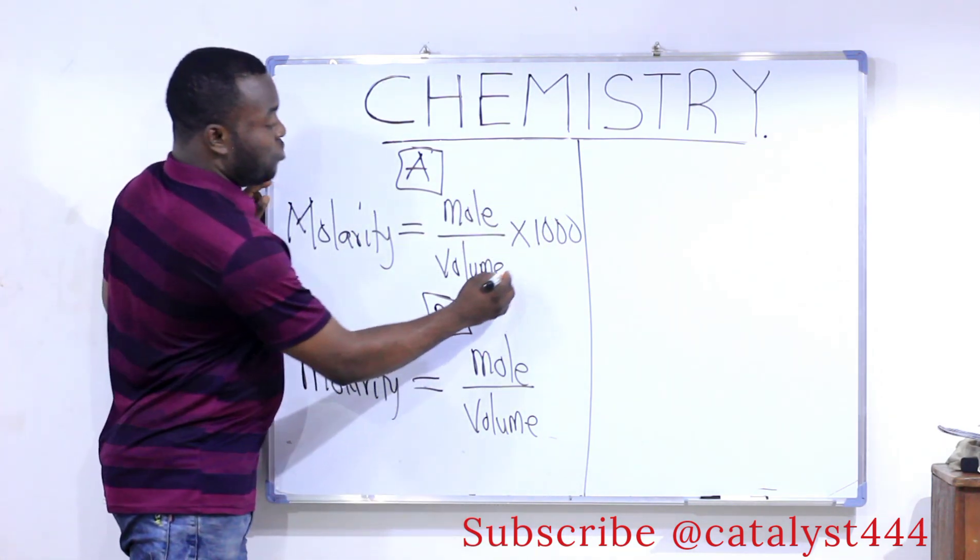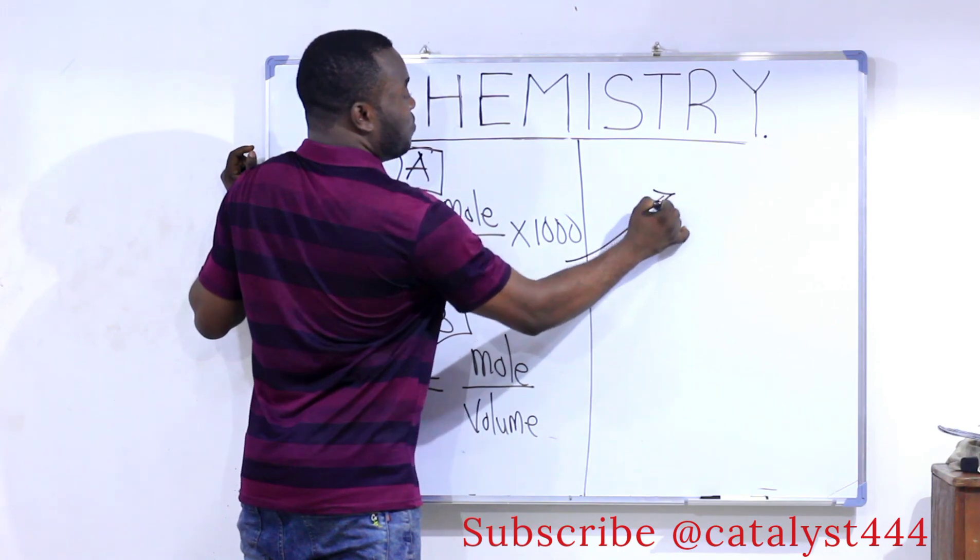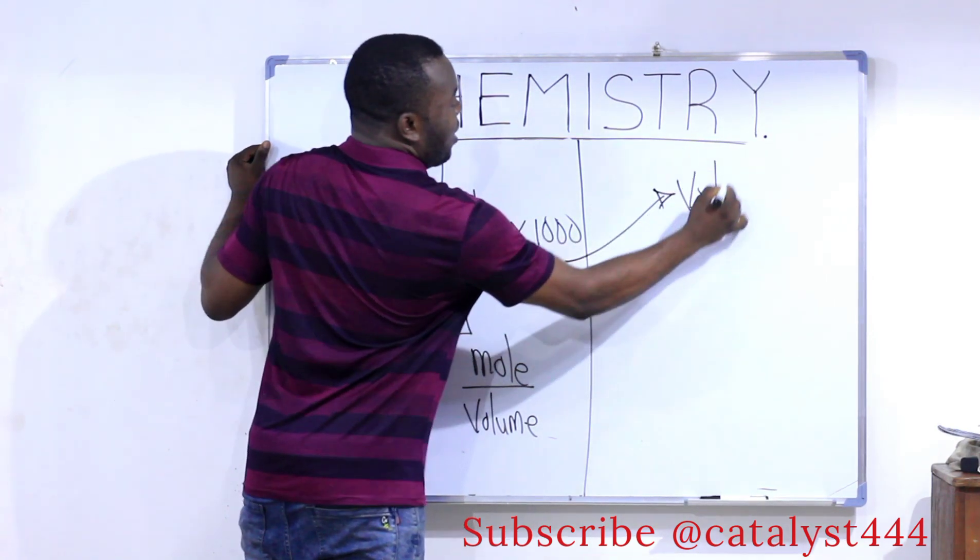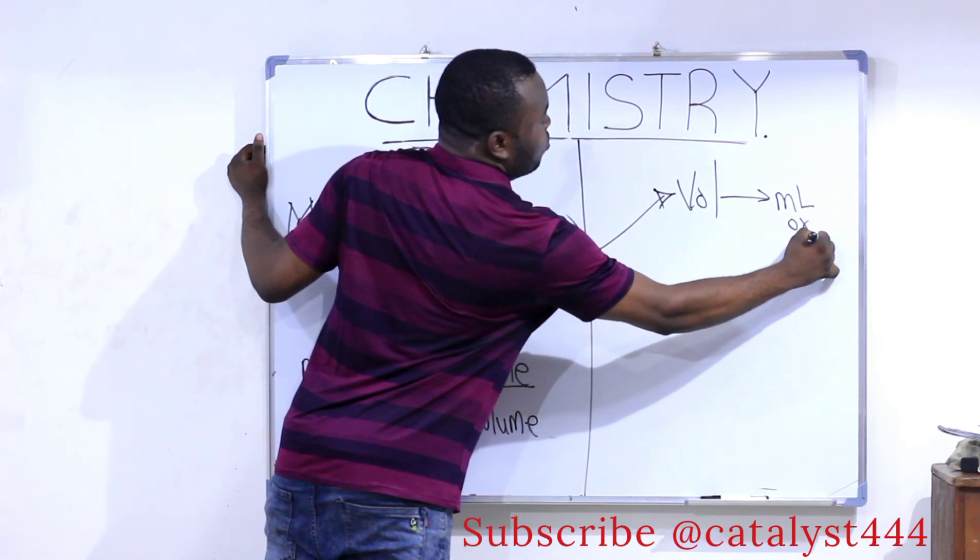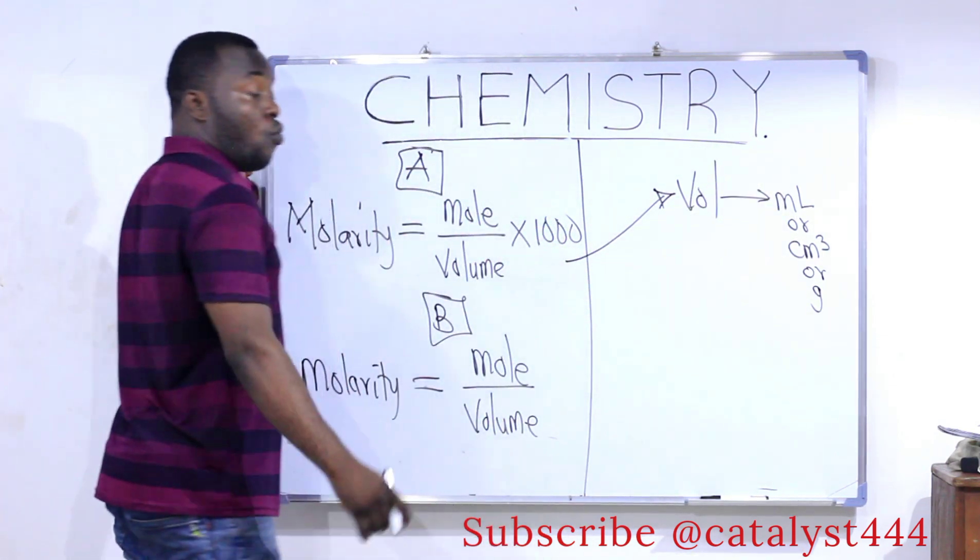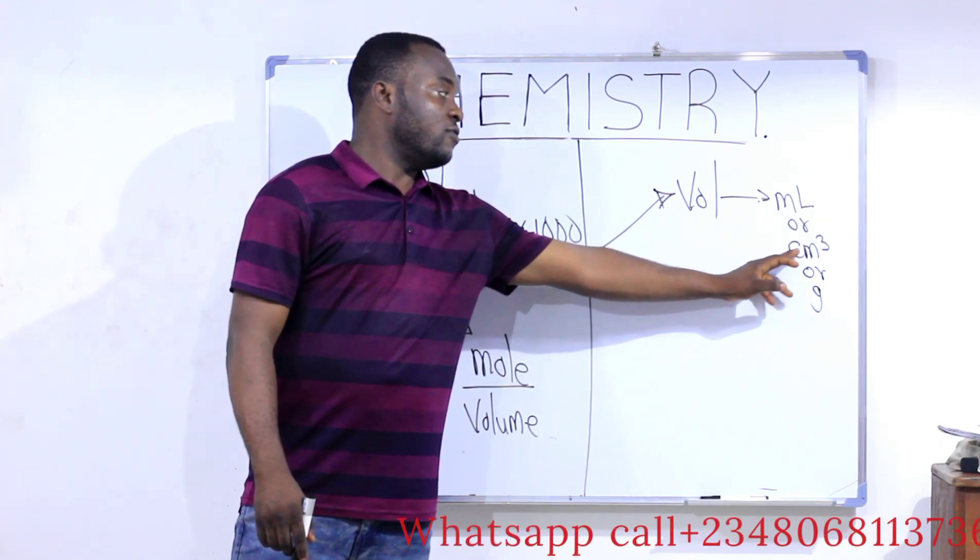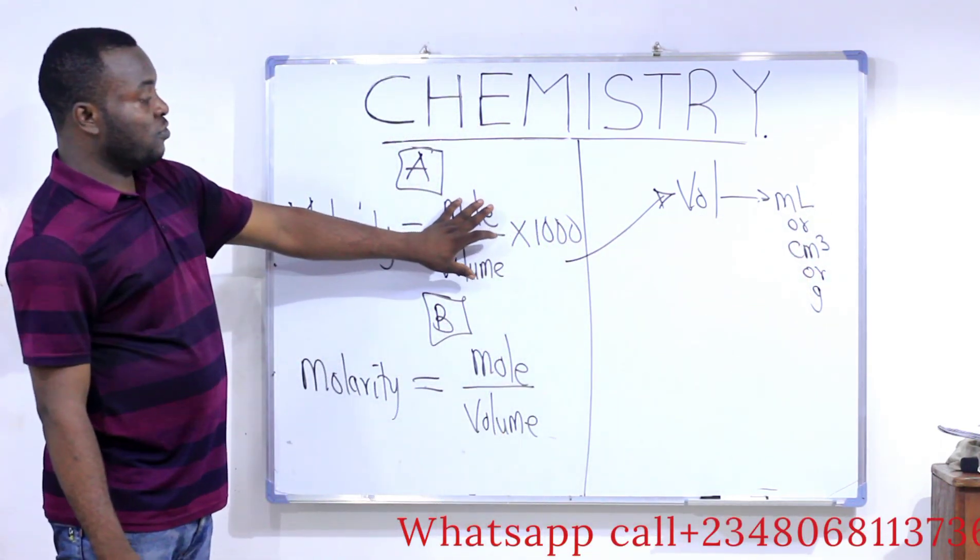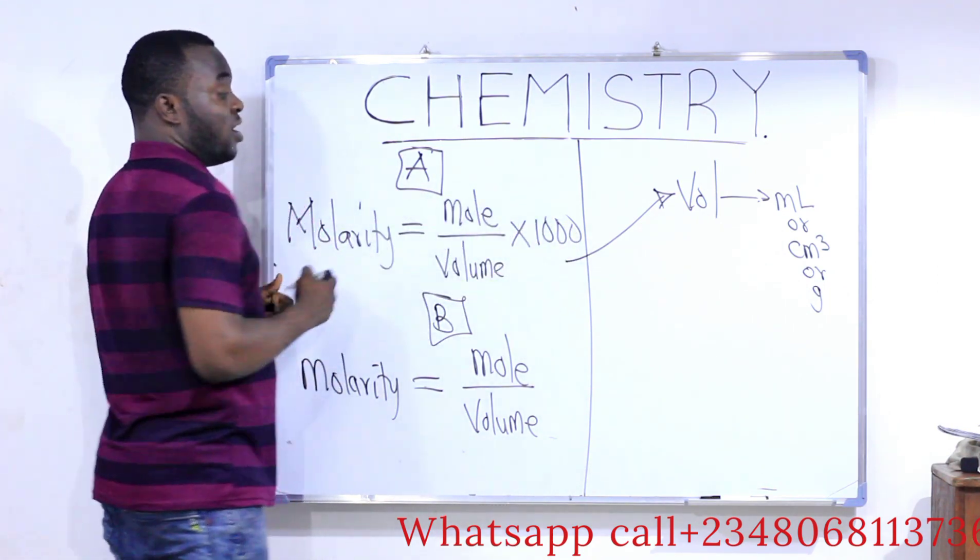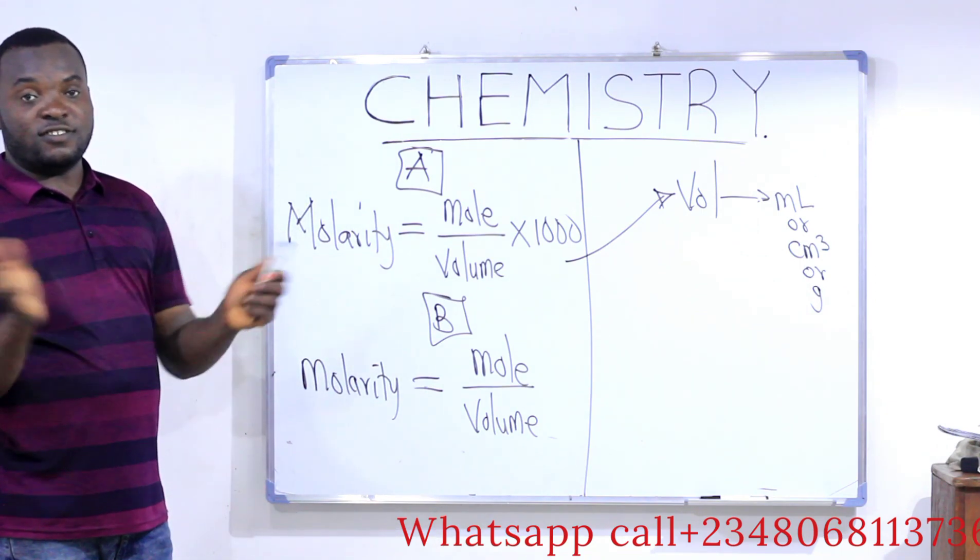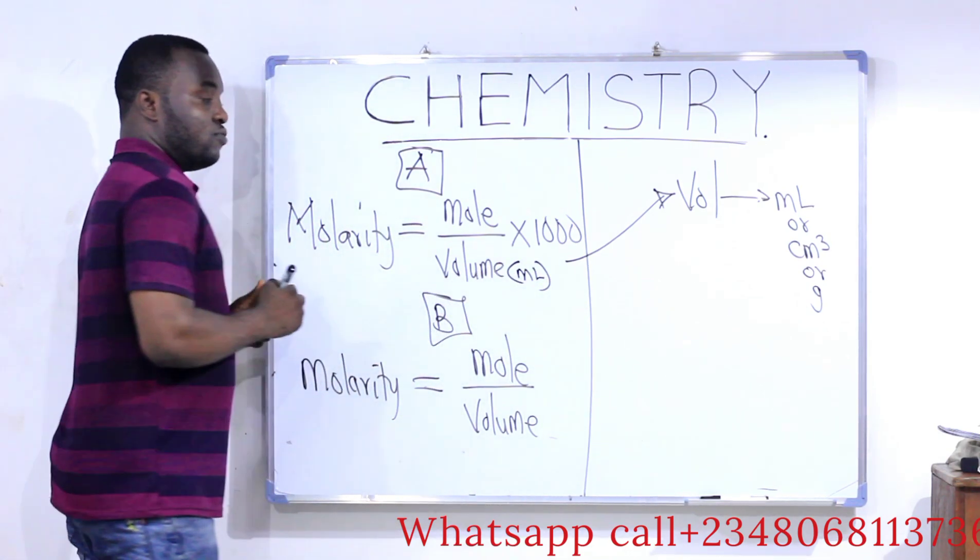When the volume given to you has a unit of milliliter, note this. For Formula A, when the volume has a unit of milliliter or centimeter cubed or grams. When the unit of the volume of the solution is expressed in any of these units, milliliter or centimeter cubed or grams, you use Formula 1. Now that is Formula A. The reason for this 1,000 is to convert the volume to the standard unit which is liter or dm³. So I can put milliliter here to differentiate it.